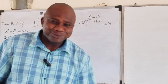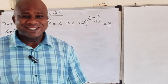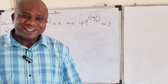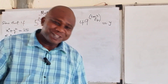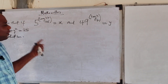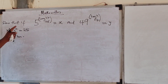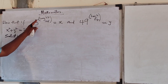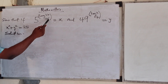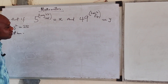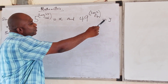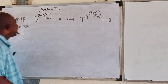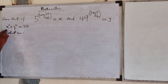Good afternoon everyone, welcome to i-Square Maths Academy, where numbers and variables actually meet mastery. Today we have a question: if 5 raised to the power of log 27 base 125 is equal to x, and 47 raised to the power of log 2 base 7 is equal to y, we should show that x squared plus y squared is equal to 35.